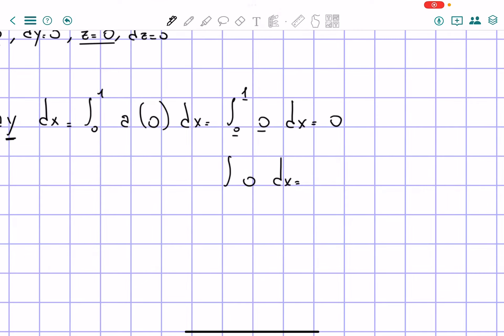But since the constant here is equal to 0, then we don't obtain anything. It would be 0x, which, of course, is equal to 0. So that is our first part solved.